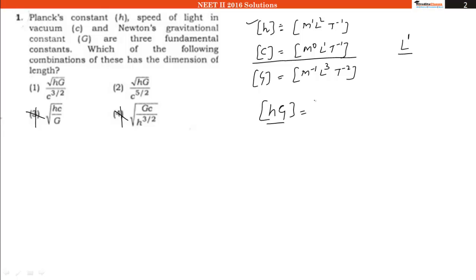So what will be the dimensions of hG? As we can see, m will become 0, l will be 5, and we will have t equal to -3. Now we have to eliminate t also.